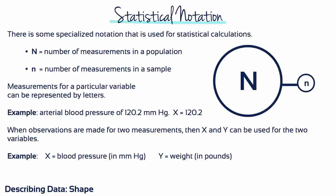It's useful to specify how many scores are in a data set. We use the uppercase letter N to represent the number of scores in a population and a lowercase n to represent the number of scores in a sample.